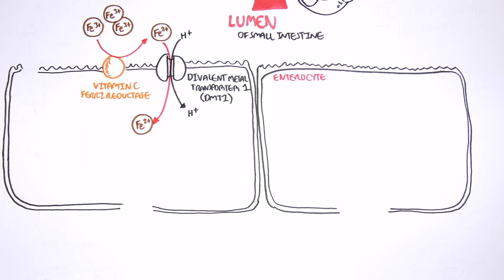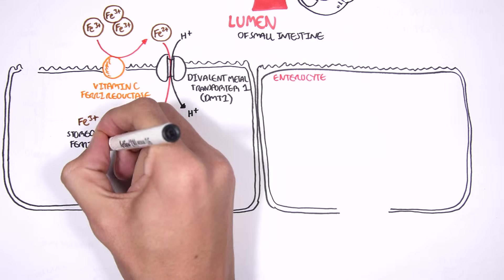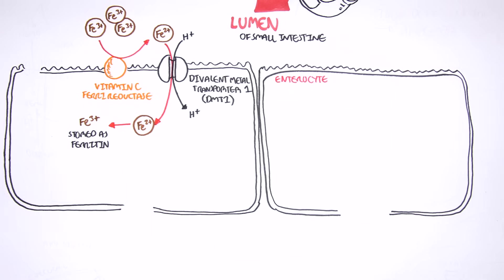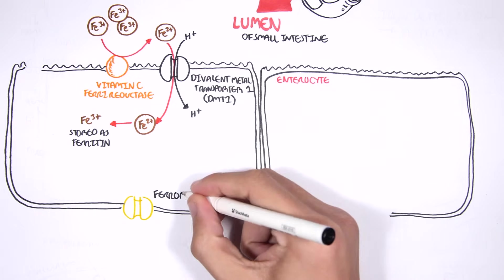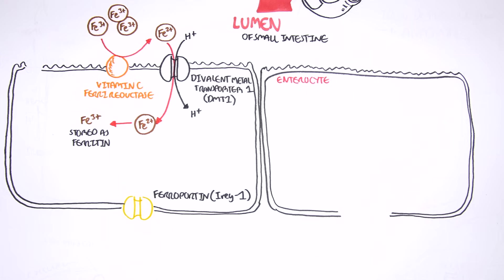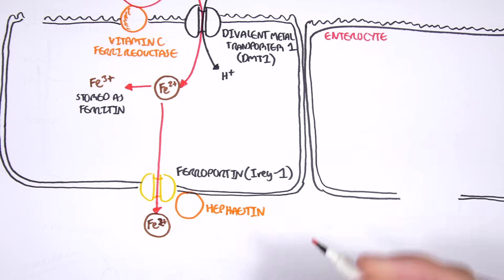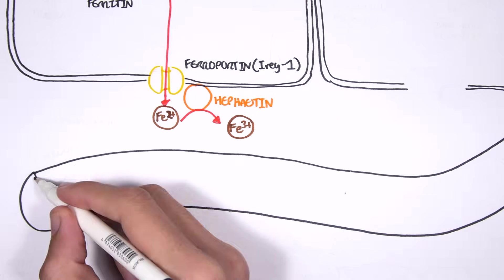So, this ferrous iron, what happens to it? Well, the ferrous iron can be oxidized back to ferric iron. Iron that is stored in cells are stored as ferritin, Fe3+, or ferric iron. The ferrous iron, Fe2+, can also be transported to other cells around the body, to the liver and to the bone marrow. Iron leaves the cell through the basal surface through a transporter called ferroportin, or IREG1. Iron has to be converted to the ferric form in order to be transported around. And so, once outside here, an enzyme, hephaestin, converts the ferrous form into the ferric form.